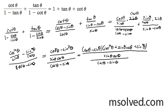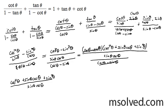Bringing this around, I can cancel these two — I can remove the cosine theta minus sine theta factor from the top and bottom. So I'm left with cosine squared theta plus sine theta cosine theta plus sine squared theta over sine theta cosine theta.